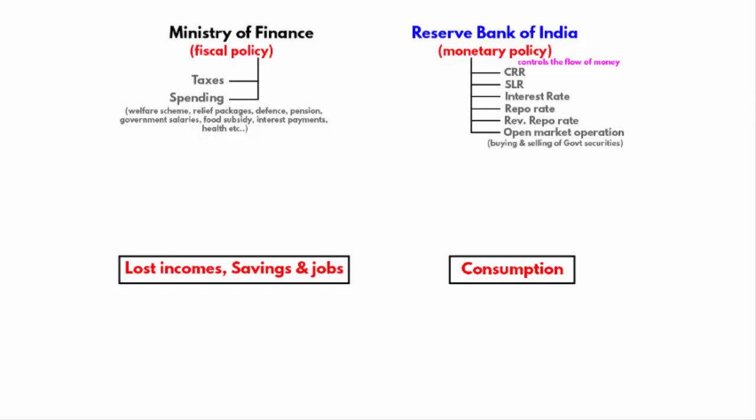Now that we have established these two important points as our reference, if you look at them, you will realize both are interdependent on each other. Consumption is dependent on your income, job and savings. Similarly, if you have a job, that will bring income, and that is how you will be able to save and consume. These two are interdependent on each other.